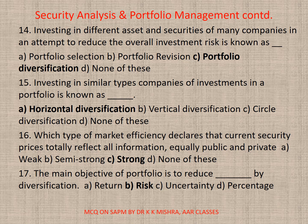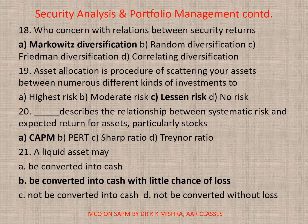Question 16: Which type of market efficiency declares that current security prices totally reflect all information, both public and private? Correct option is C — strong. Question 17: The main objective of a portfolio is to reduce — correct option is B — risk. Question 18: Who concerns with the relations between security and security returns? Correct option is A — Markowitz diversification.